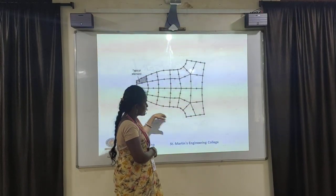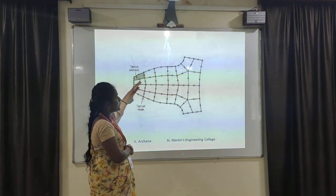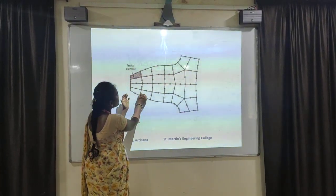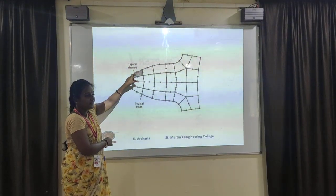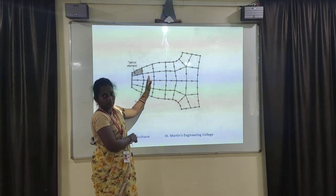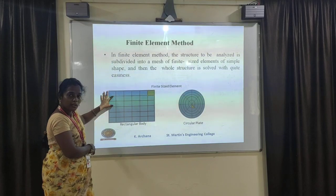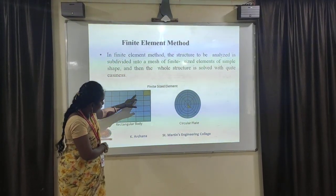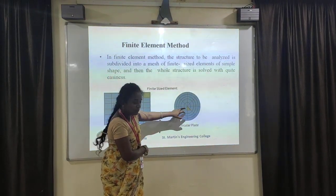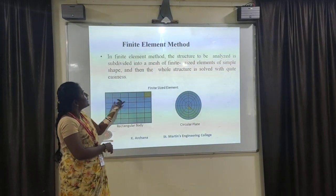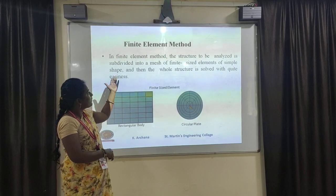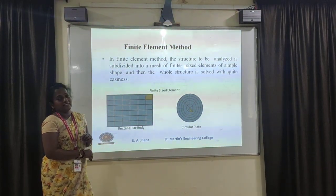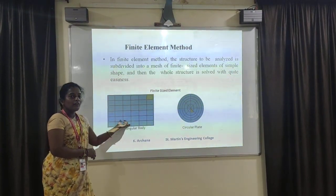This is a totally irregular object. We cut it into a number of several parts — this is a typical element and these dots are the nodes. Two elements meeting at a point make that point a node. For a rectangular body, we cut it into a number of parts and these points are called nodes. This is also shown for a circular plate where triangular panels are used. In the finite element method, the structure to be analyzed is subdivided into a mesh of finite-sized elements of simple shape, making the solution easier to solve. The section is divided into a number of elements — that is the advantage.